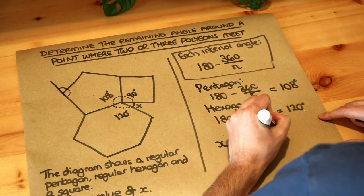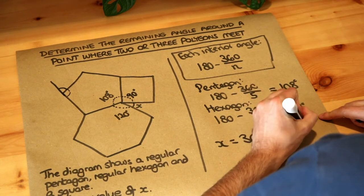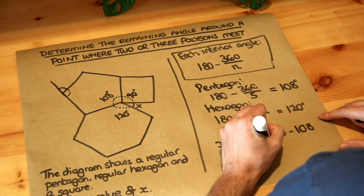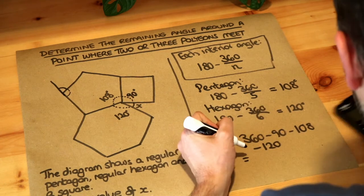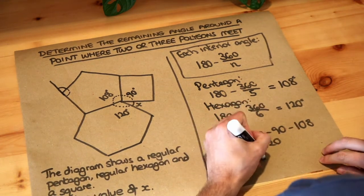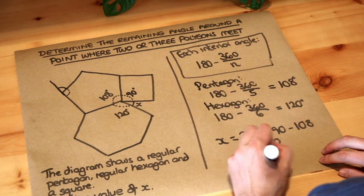So 360 minus 90 minus 108 and minus 120 and I'm going to do that on a calculator and that's 42 degrees. So that's the final answer.